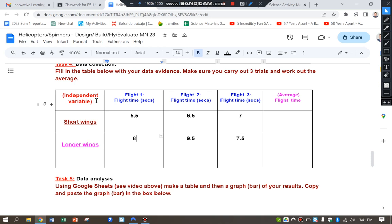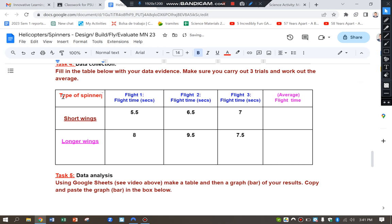Firstly, I'm going to put in type of spinner or helicopter and then short or long wings. And I've done that. I'm going to highlight Ctrl C or right click and copy. Open up a new spreadsheet by typing in sheets.new.